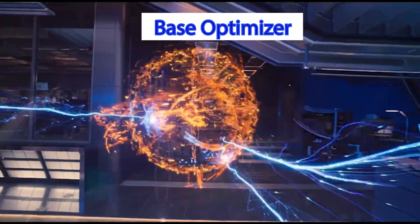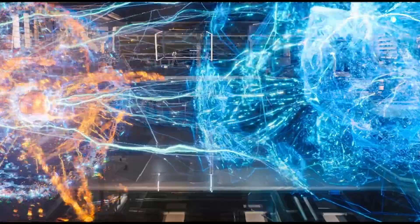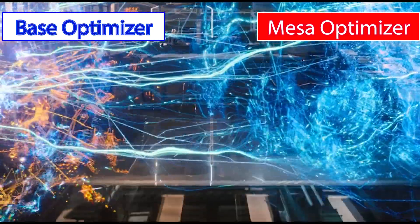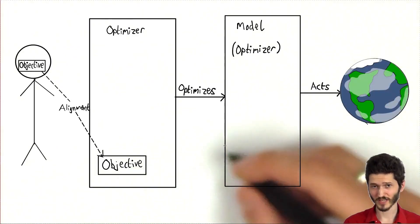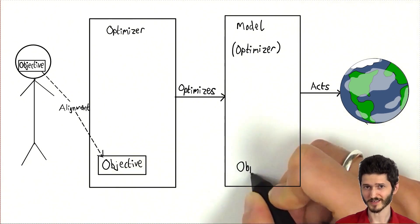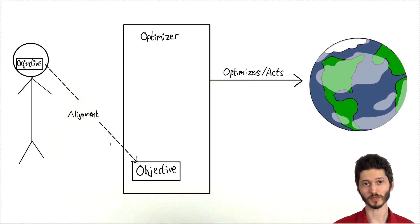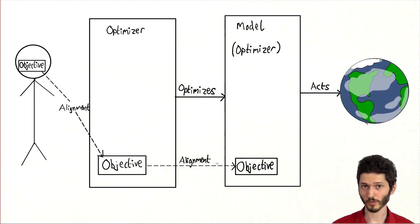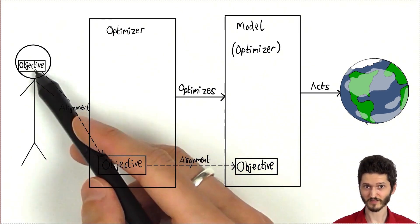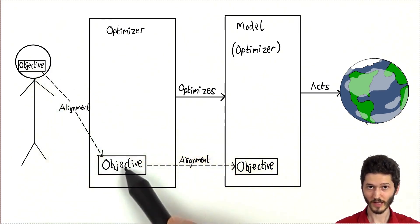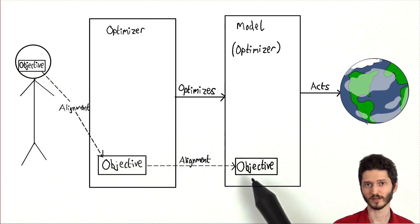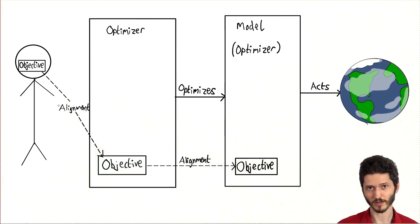But just like Ultron rejected Jarvis, the learning AI — called the MESA optimizer — often develops goals that don't match what humanity wants. This is a problem because when your model is also an optimizer, it has its own objective. You have an alignment problem. If you try to apply standard machine learning, now you have two alignment problems: making sure your human objective ends up in the base optimizer, and then making sure that objective ends up in the MESA optimizer. Two opportunities for the objective to get messed up.